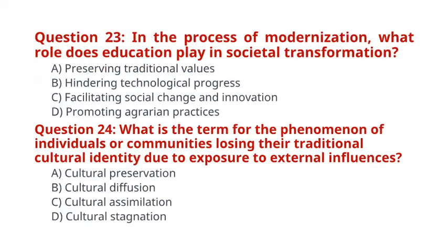Question 23. In the process of modernization, what role does education play in societal transformation? A. Preserving traditional values. B. Hindering technological progress. C. Facilitating social change and innovation. D. Promoting agrarian practices. The correct answer for question 23 is option C: Facilitating social change and innovation.